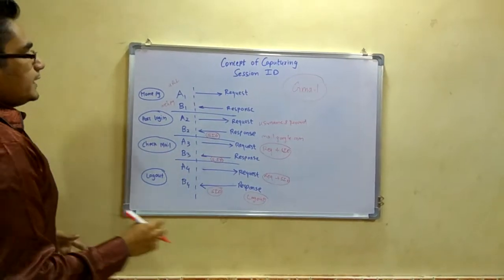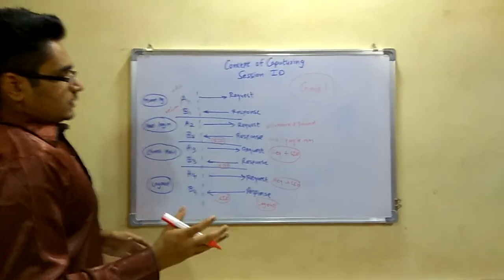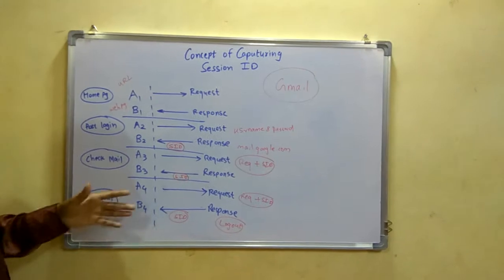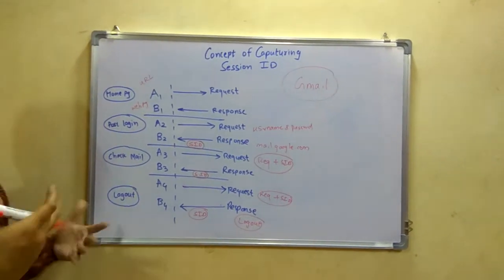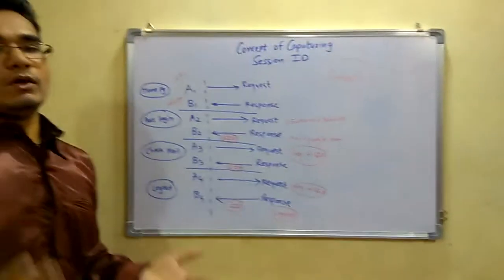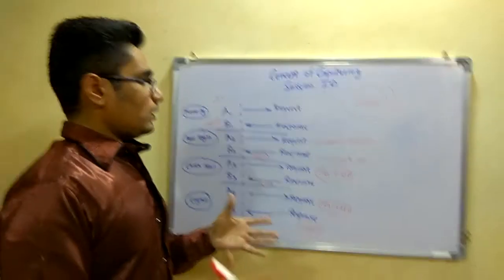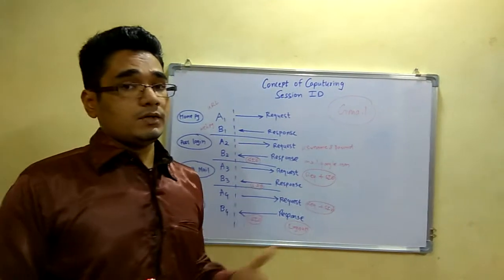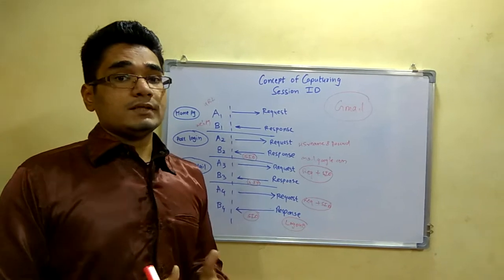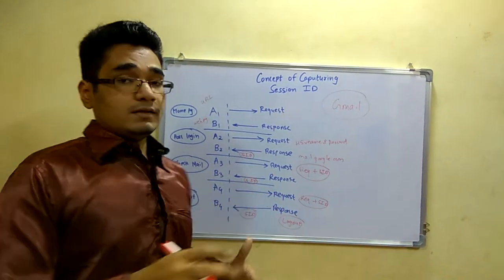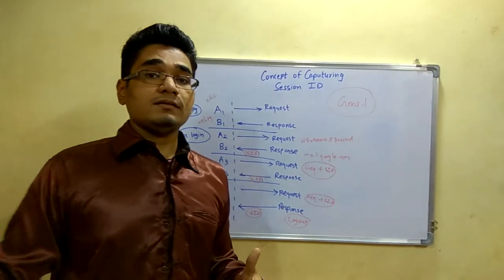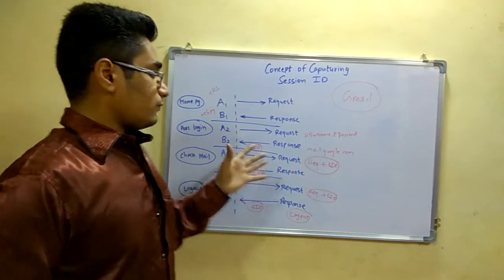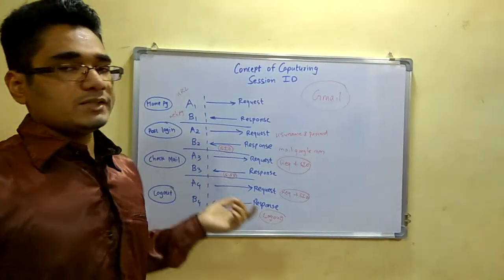The server will be identifying which user is accessing the site — that is determined by this SID, the session ID. There would be many users concurrently accessing the Gmail website, so how will the server know that this particular user is only accessing his particular mail and not seeing some other person's data? For that you need the session ID.